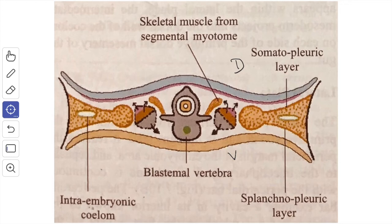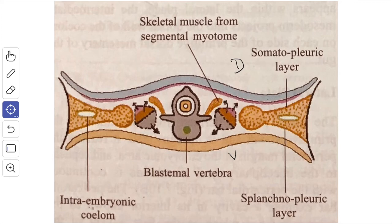The occipital somites and the most cranial pre-aortic unsegmented mesenchyme are involved in the development of the base of the skull and most of the calvaria. The caudal somites disappear early. All striated muscles of the trunk, along with the muscles of the tongue, diaphragm, and limbs are derived from the myotome. The somites exert a specific effect on the orientation of the growing spinal nerve, which pass preferentially through the cranial half of the sclerotome.